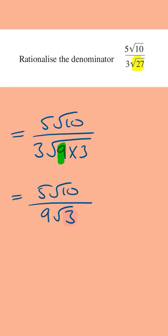Now we've got a root at the bottom which is in its simplest form, and so we're going to multiply the top and bottom of this fraction by that same root. And so we're going to multiply it by root 3 over root 3.